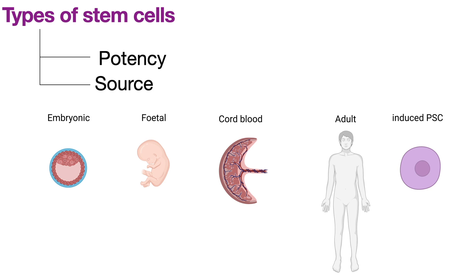A new type of stem cell called the induced pluripotent stem cell was discovered in 2006 by Shinya Yamanaka. He found four transcription factors — Oct4, Klf4, cMyc, and Sox2 — which are expressed in embryonic stem cells. These four transcription factors can be used to achieve pluripotency in adult fully differentiated cells, which can then be differentiated into any other desired cell type, allowing the development of patient-specific cells for treatment and overcoming the scarcity of stem cells in adult bodies.